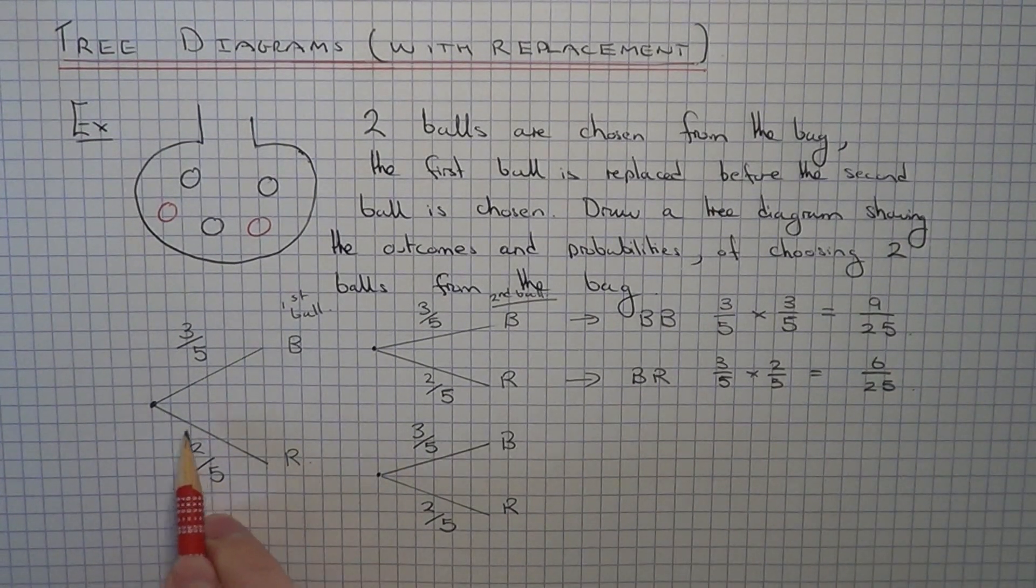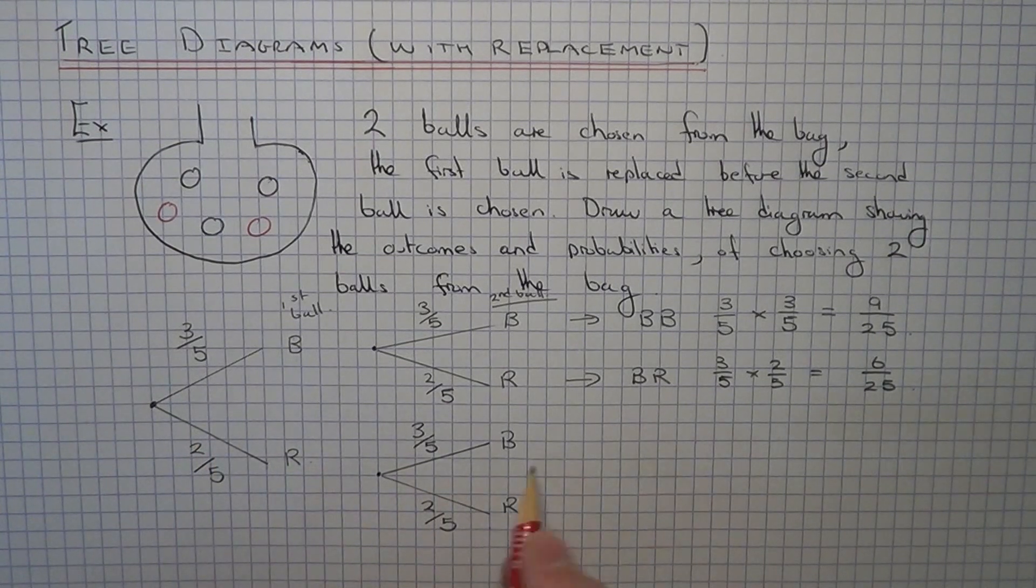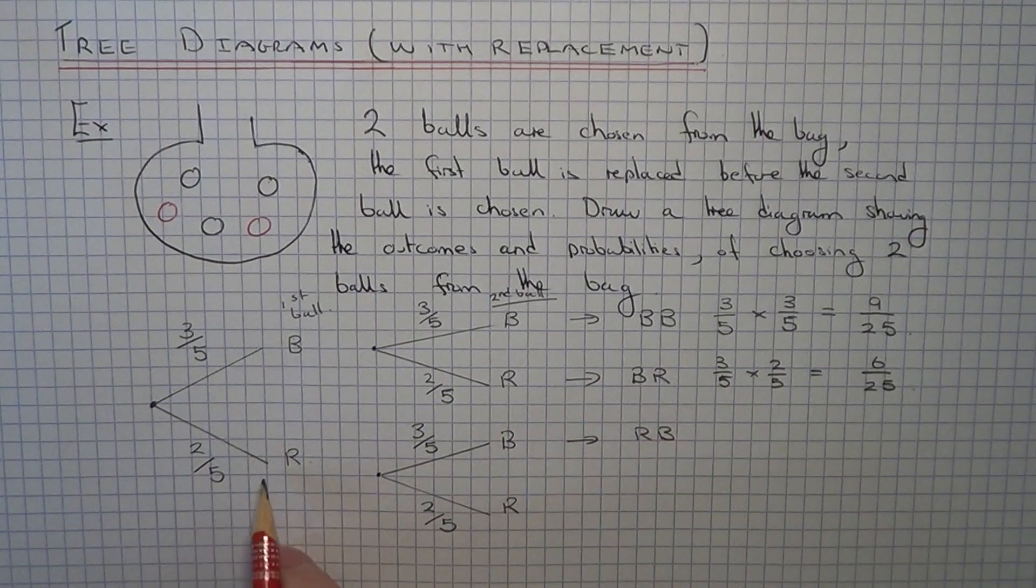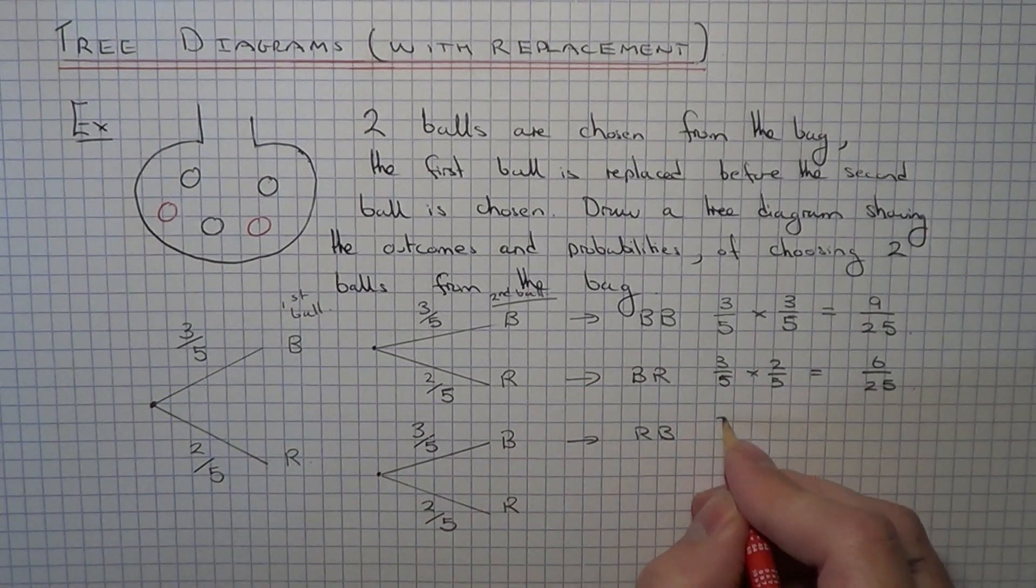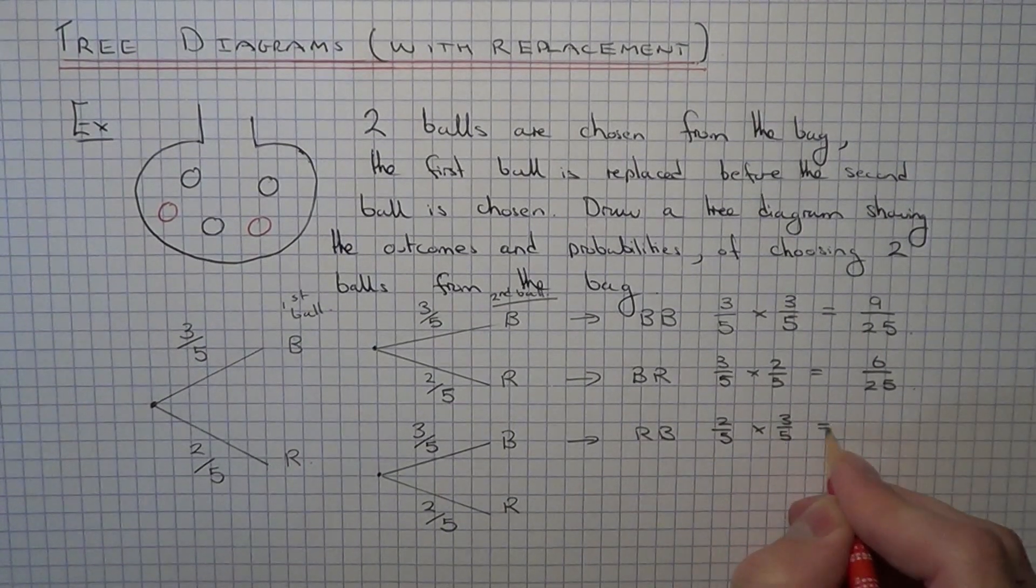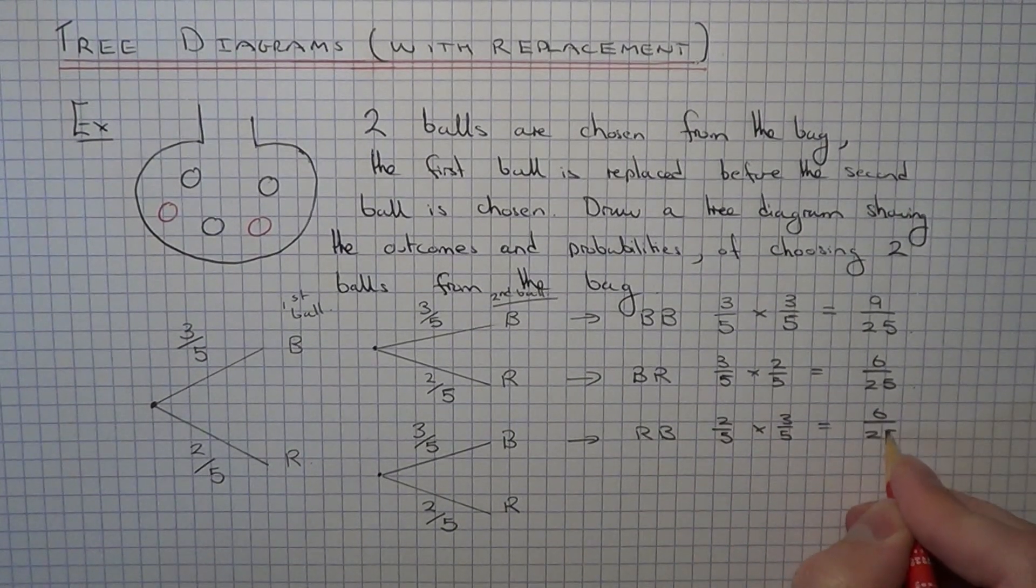Our other outcome would be to get a red ball followed by a black ball. So multiply the probabilities along the branches. This is 2/5 times 3/5, which is 6/25.